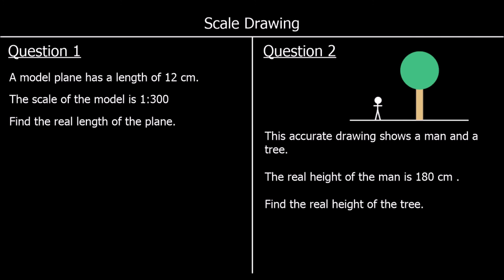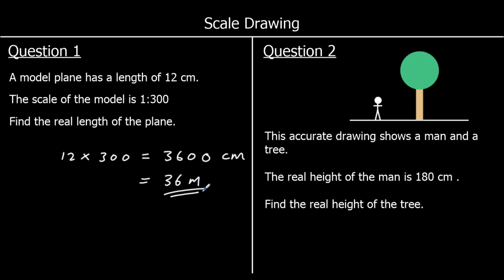To finish up, we've got two questions — pause the video, give them a go, and press play when you're ready for the answers. Question 1: a model plane has a length of 12 centimeters and the scale of the model is 1 to 300, so the real plane is going to be 300 times as big. Find the length of the real plane. 12 lots of 300: 12 threes are 36, add the two zeros, so 3,600 centimeters. If we want the answer in meters, we divide by 100 and get 36 meters.